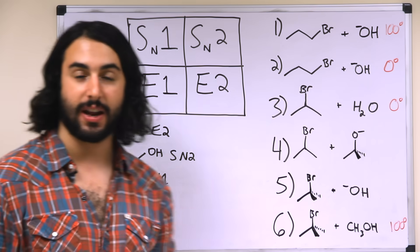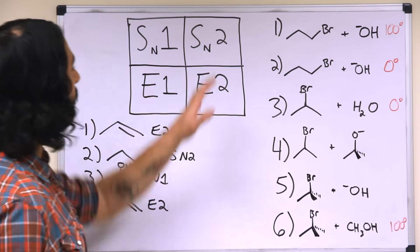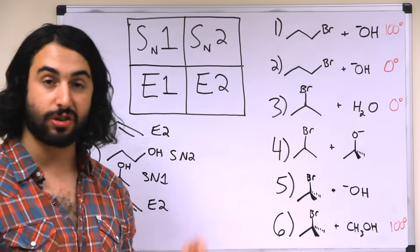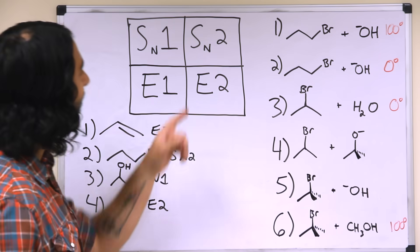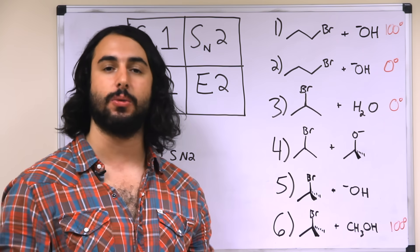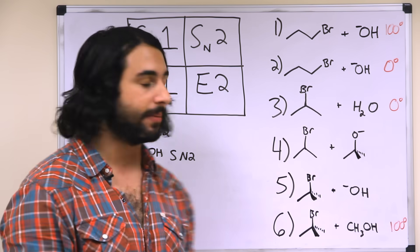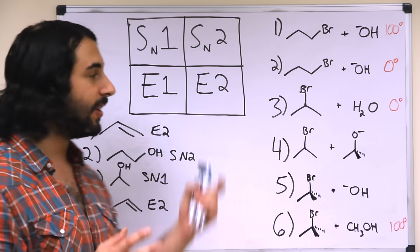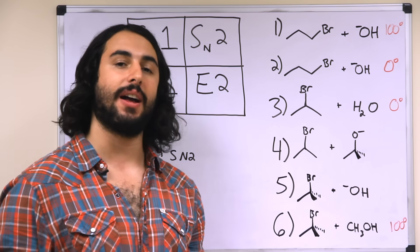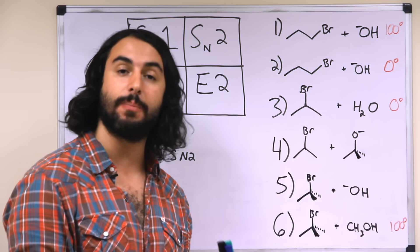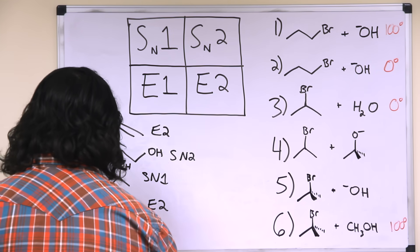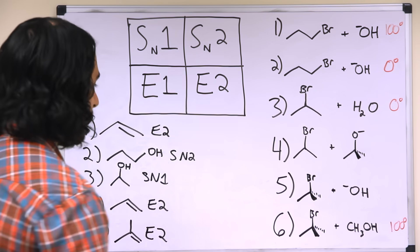Now let's look at a tertiary haloalkane with hydroxide. With tertiary, we can rule out SN2 immediately. Hydroxide is strong — it's a strong base and a strong nucleophile — so it can do SN2 or E2 without waiting for a carbocation, meaning SN1 and E1 aren't going to happen. But we just said it can't do SN2, so the only possibility is E2. We don't even have to look at temperature — the steric hindrance of the substrate rules out substitution, giving us the E2 product.